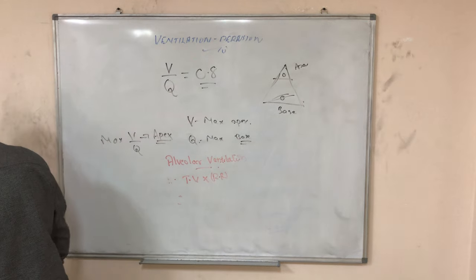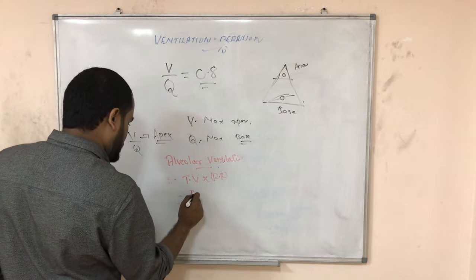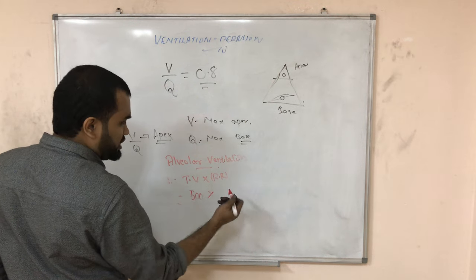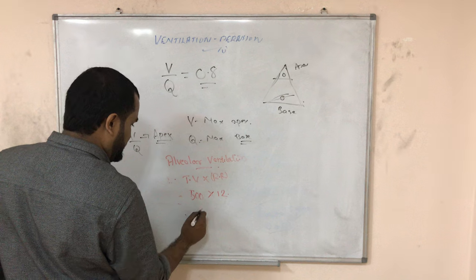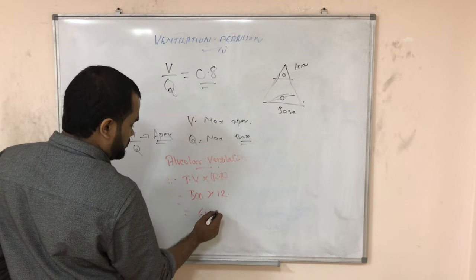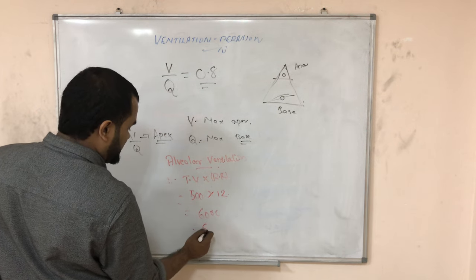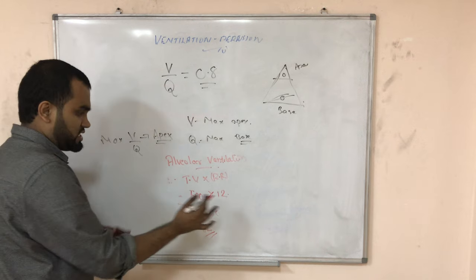TV is 500 ml, right? Into respiratory rate 12 to 16. Let me take 12. 12 into 500, so 6000 ml or 6 L. That is the alveolar ventilation rate, around 6 L.